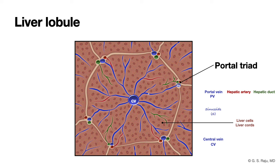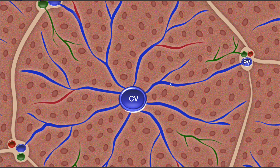Let me make this slide a bit bigger so you can see this anatomy clearly. You can see the portal vein branch emptying its blood into the sinusoids, marked by 'S', and the sinusoids join the central vein — which ultimately drains back into the central vein in the liver lobule.